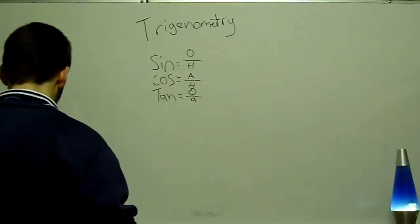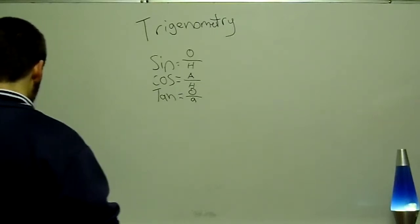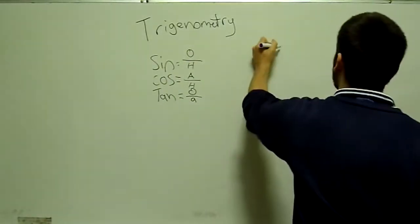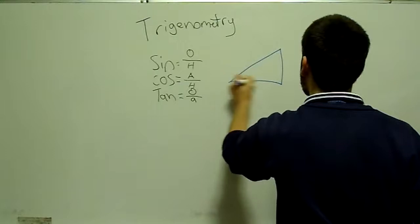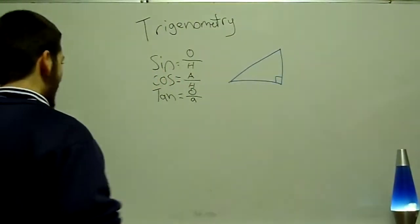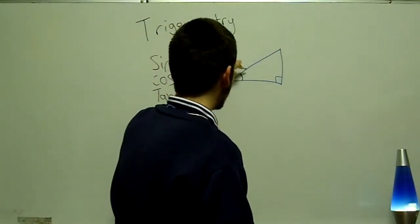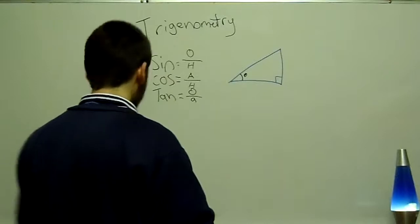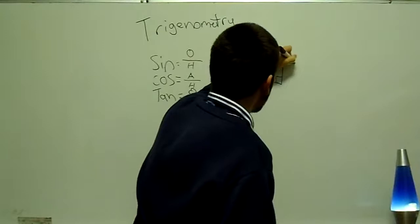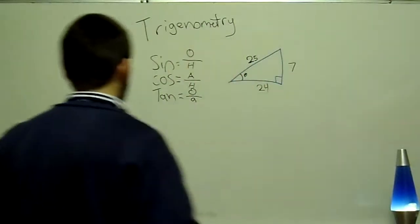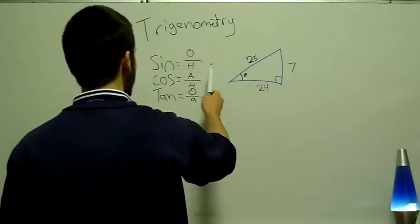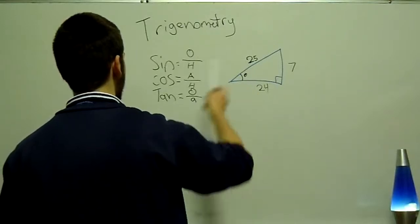So first off, they're asking you to write and find the values of the following trigonometric ratios. So you have a triangle. You've got a right-angled triangle, and you have the specifications where you've got theta over here. 25 up here, 7 on the side, and 24 down here. And what they want you to find is the sine, cos, and tan of this theta right here.